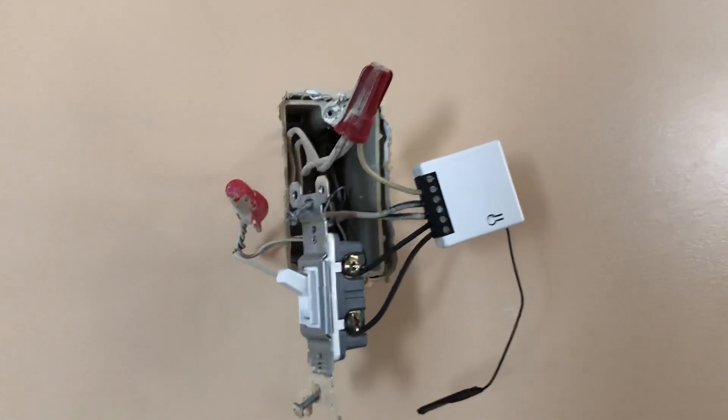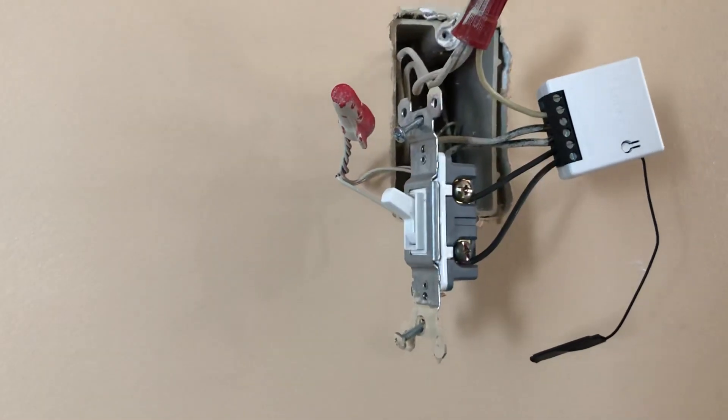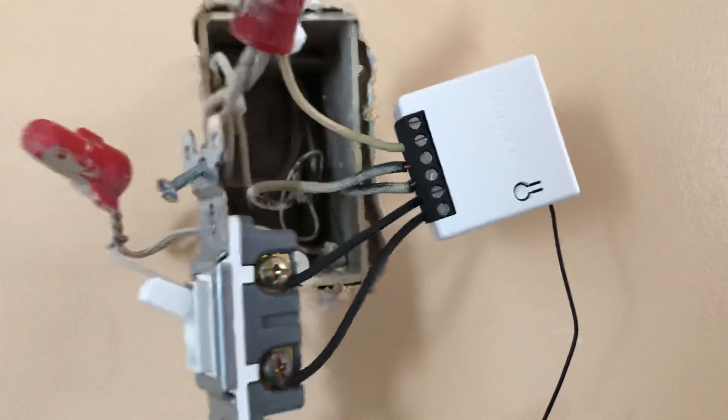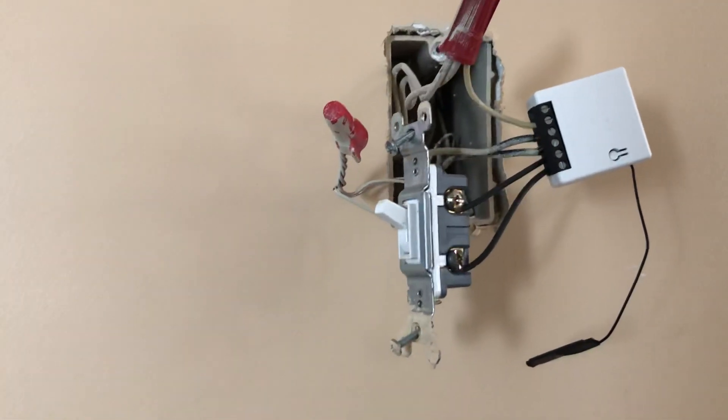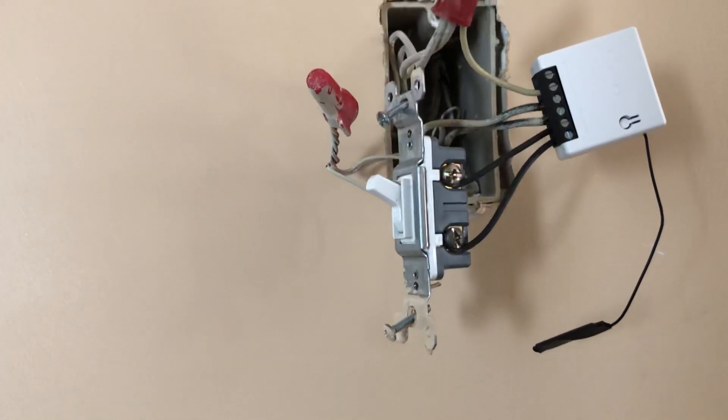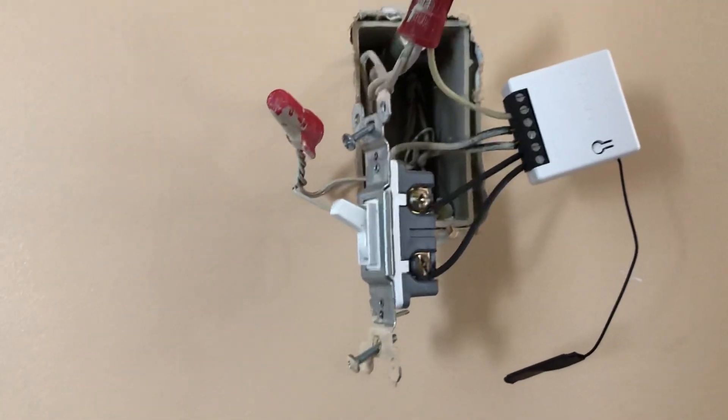If you're a newbie to the Home Assistant community like me and just want to find a simple wiring guide on the Sonoff minis, I haven't really been able to find one, so I thought I'd put one together and show how I did it. This is a simple single switch, not a three-way or anything like that.